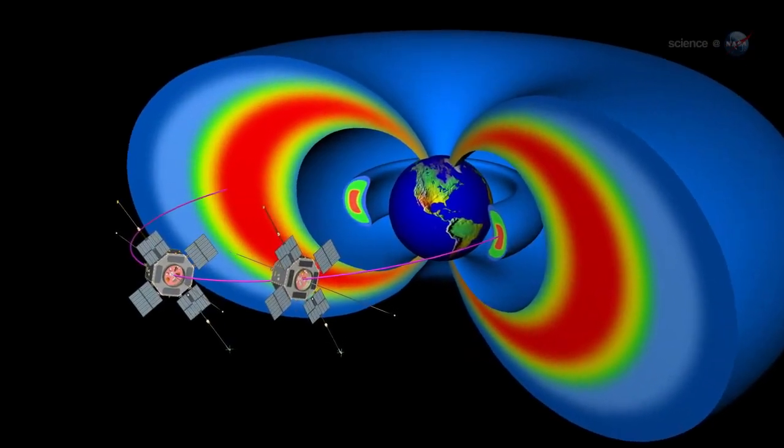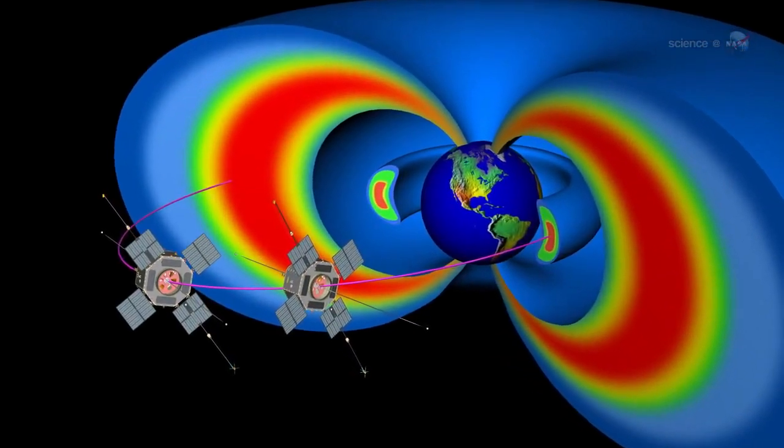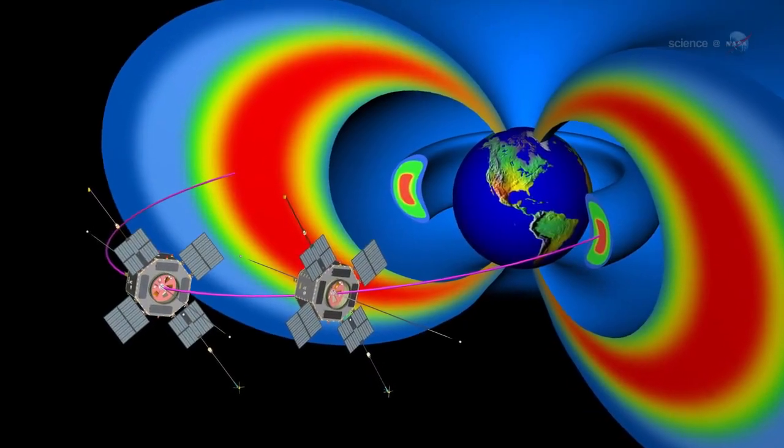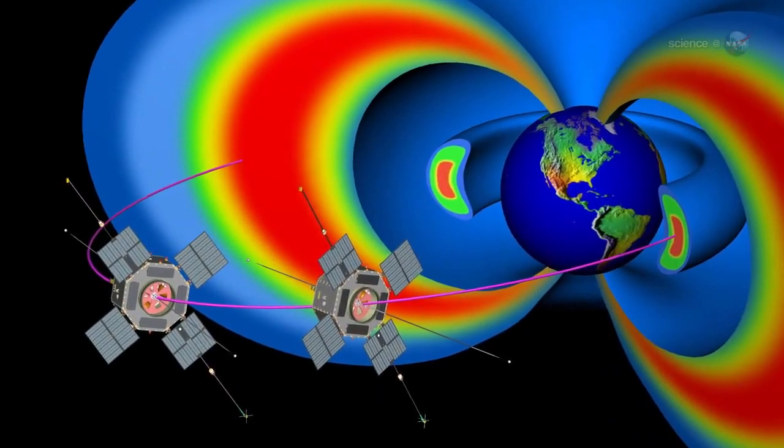Chorus emissions are front and center for the storm probe mission, says Kletzing. They are thought to be one of the most important waves for energizing the electrons that make up the outer radiation belt.